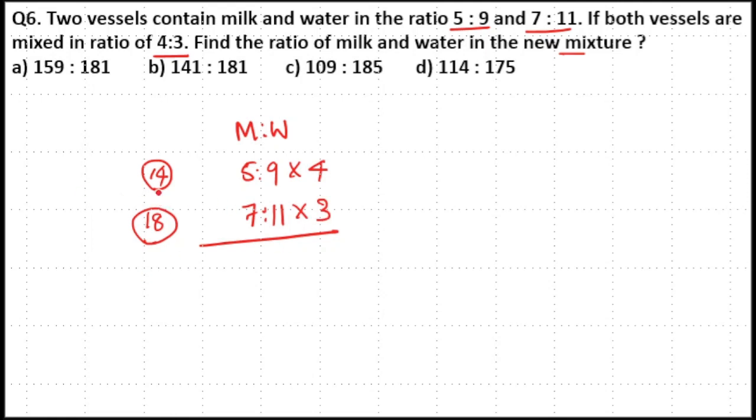Now you have 4 and 3 here, so I will directly write 18 and 14 here. That is, multiply 14 parts with the below ratio - that is 14 with the second ratio, and multiply 18 with the first ratio.